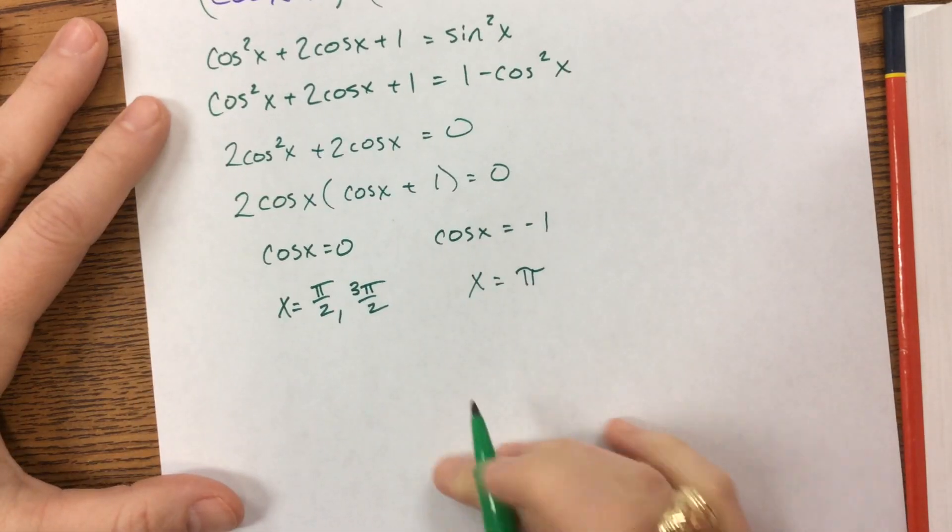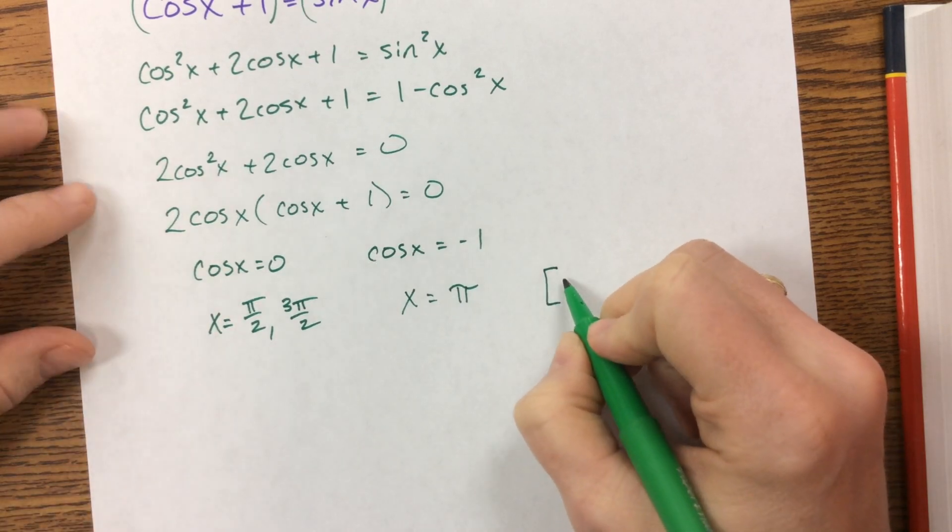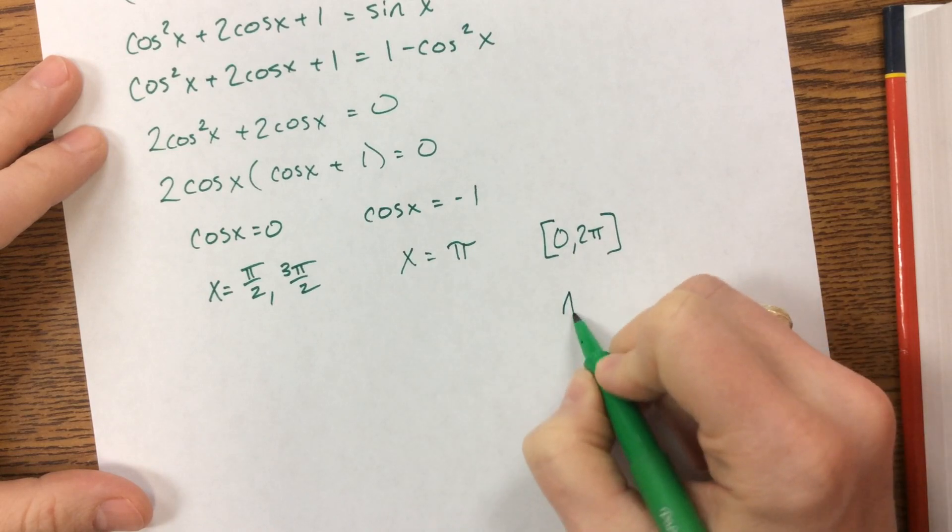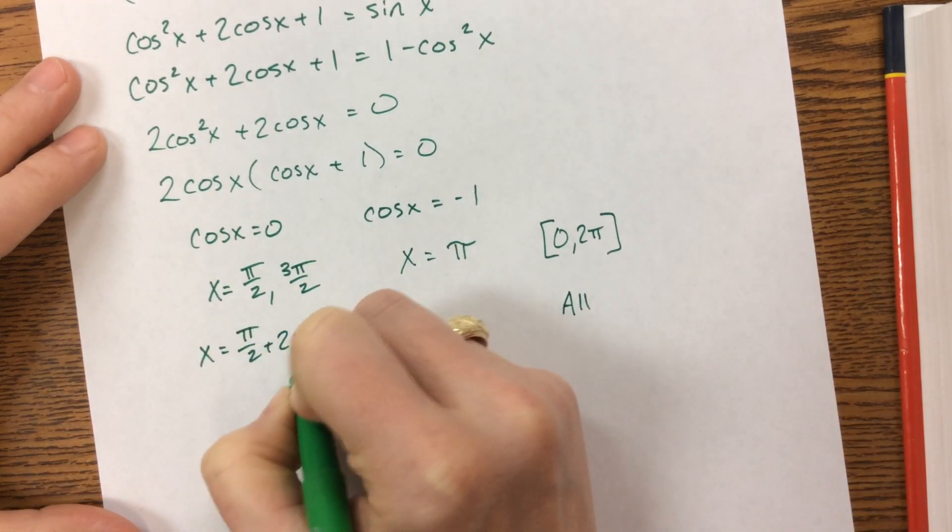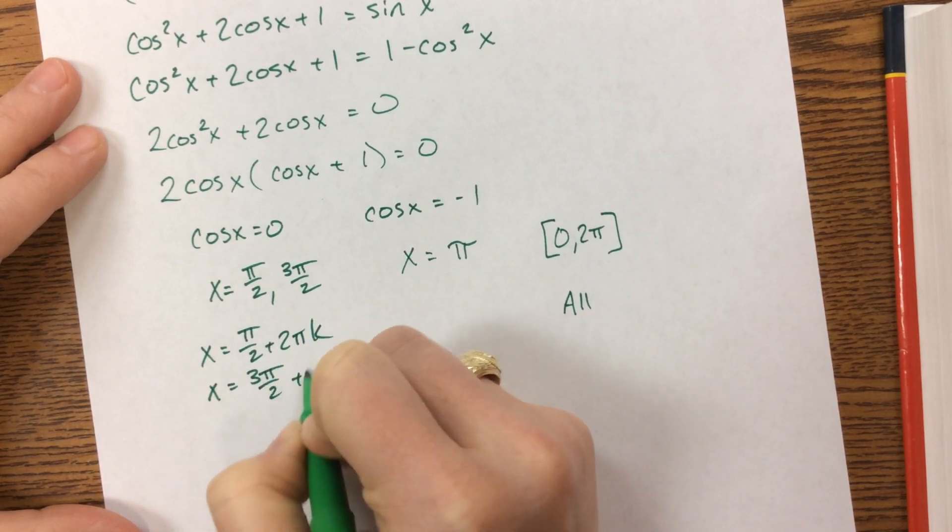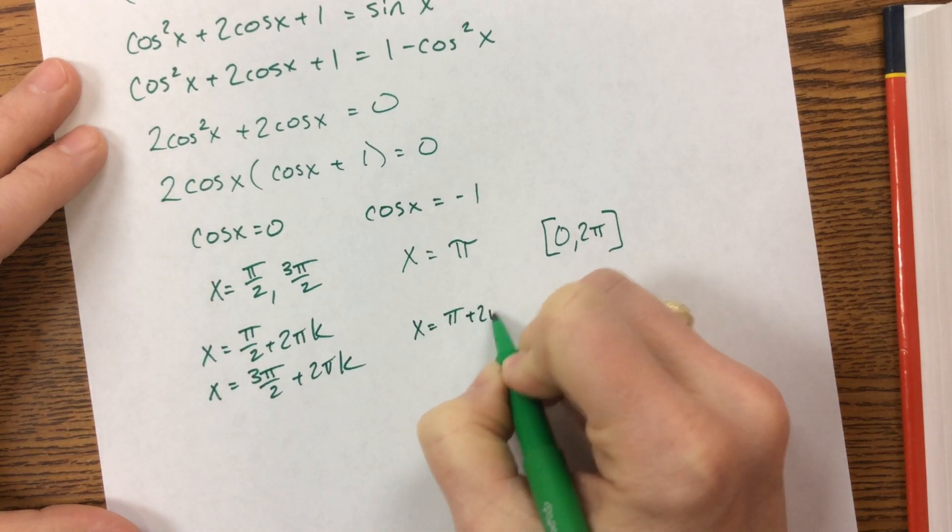And what I need to do, so if they said, if this would be the answer, well, it wouldn't actually, but if they had said from 0 to 2 pi, that's what I could do. If they had said find all, then I would need pi over 2 plus 2 pi k. I would need 3 pi over 2 plus 2 pi k, and I would need pi plus 2 pi k.